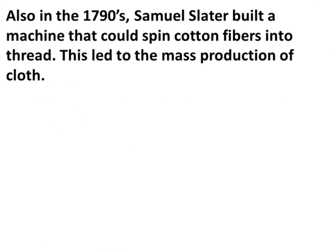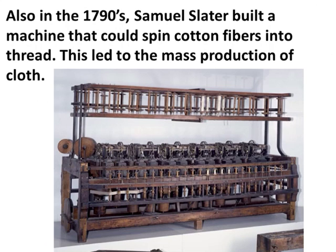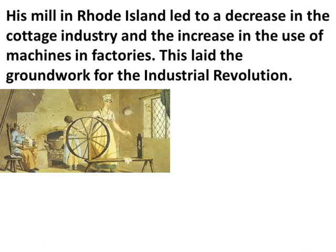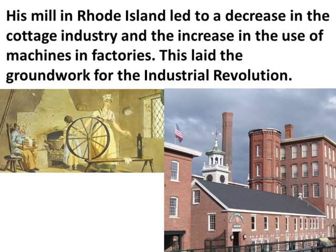Also in the 1790s, Samuel Slater built a machine that could spin cotton fibers into thread. This led to the mass production of cloth. His mill in Rhode Island led to a decrease in the cottage industry and an increase in the use of machines in factories. This laid the groundwork for the Industrial Revolution. Before the Industrial Revolution, the cottage industry made products one at a time by hand, a system eventually replaced by the factory system. You see a picture here of one of the mills in Rhode Island where everything was manufactured under one roof.